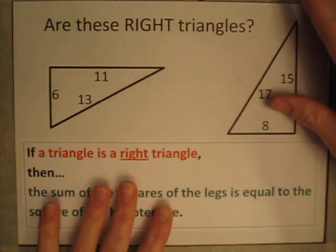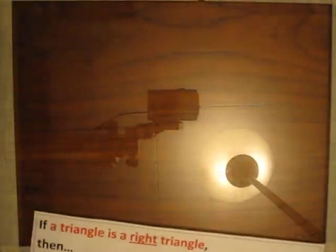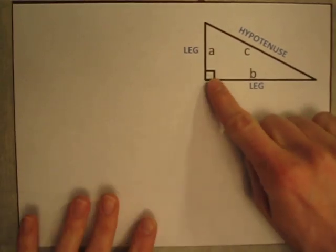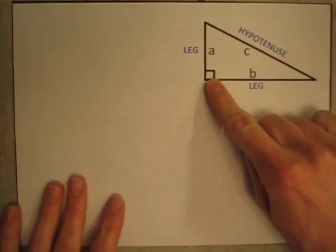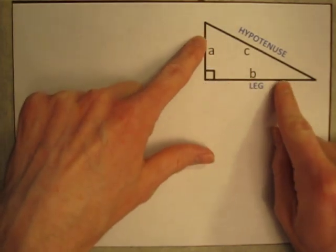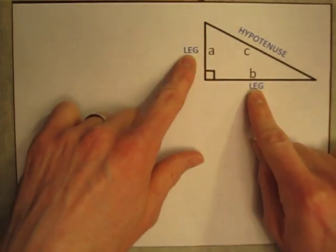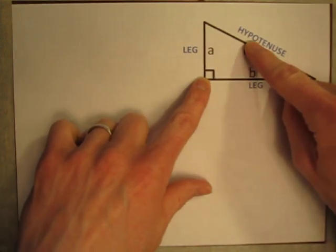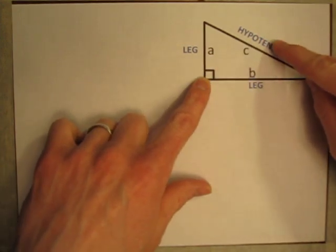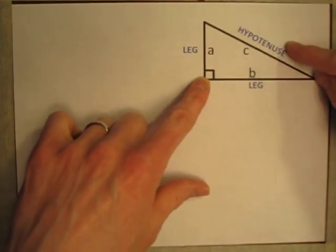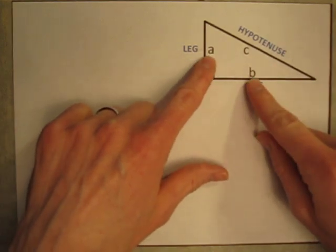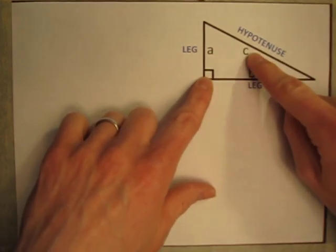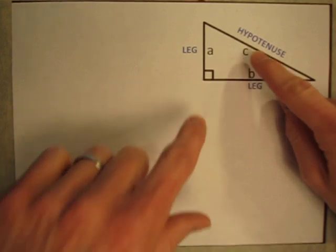So what does that mean? Let me bring over a different paper here. If we have a right triangle — there's our right angle — then the two sides that meet at that right angle, we call those the legs of the triangle. The side that is across from the right angle is called the hypotenuse. Generally, we will name the legs sides A and B, and the hypotenuse we'll call side C.